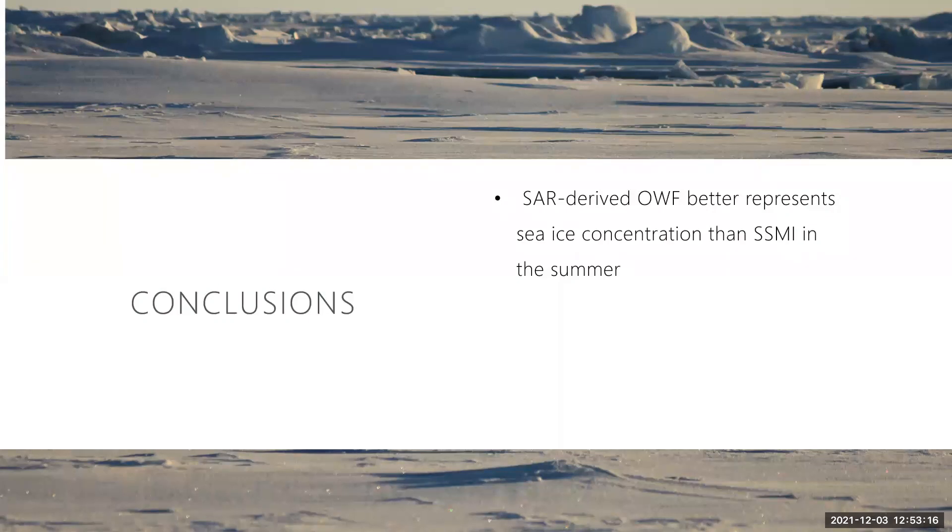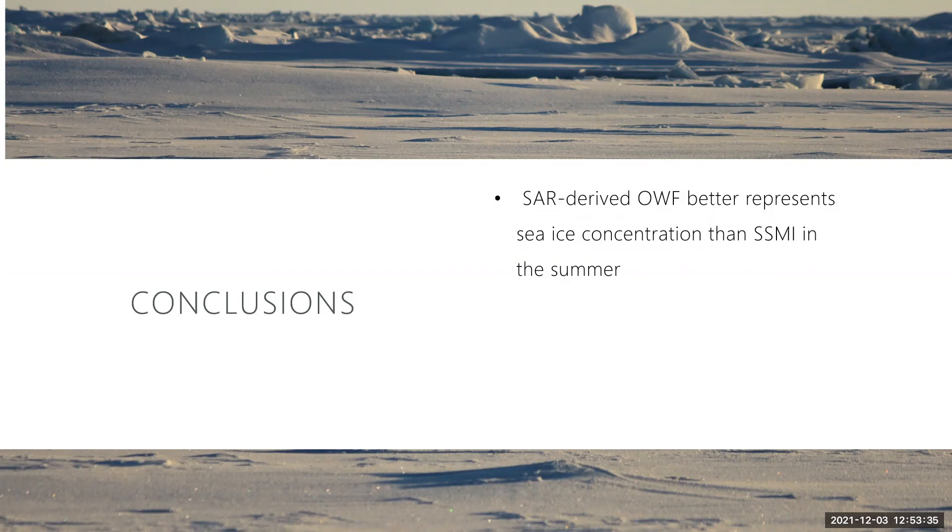So there are two main takeaways from this work. Although many studies have demonstrated that SSMI struggles in the summer away from the ice edge, this study shows SAR-derived open water fraction better represents sea ice concentration in the summer. And also, SSMI-derived open water fraction is insufficient to estimate the sinks determined in the mixed layer. And what this suggests is that previous budgets that used satellite radiometer open water fraction estimates in order to directly consider the plausibility of basal melting via direct absorption of solar radiation through open water may have been missing other important processes or contributions like through ice transmission.